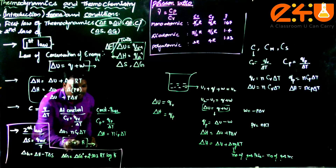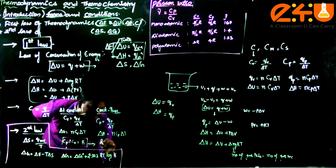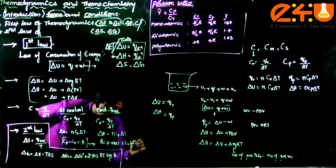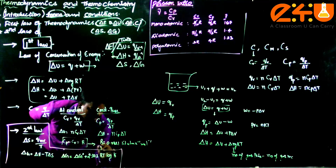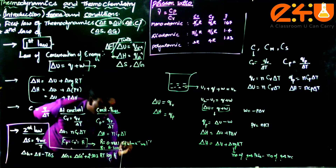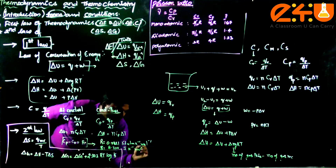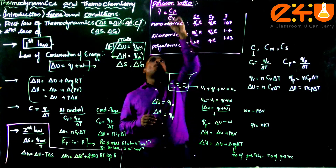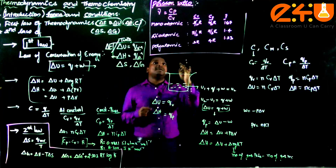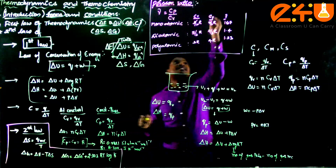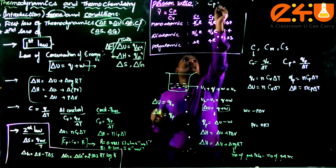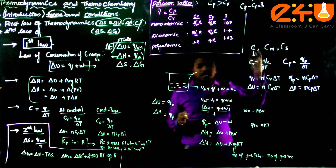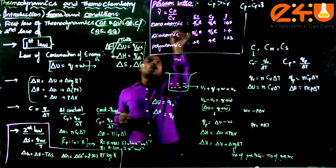Mayer's rule states: Cp − Cv = R, where R is the gas constant. R = 0.0821 L·atm/(K·mol) or R = 8.314 J/(K·mol). Poisson's ratio (γ) = Cp/Cv. Remember that Cp is always greater than Cv.